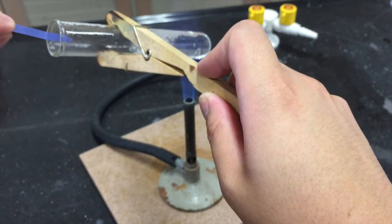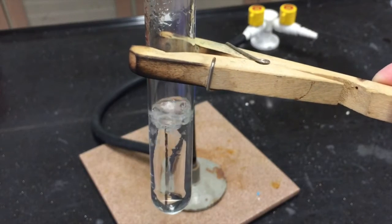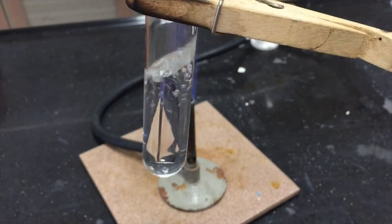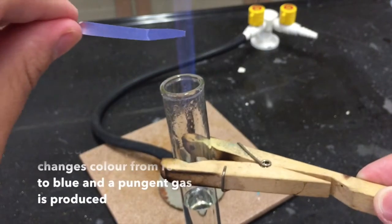You will notice that the red litmus paper changes colour almost immediately. The colour change is from red to blue.